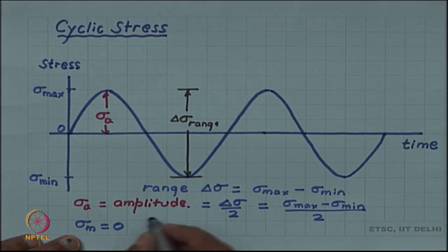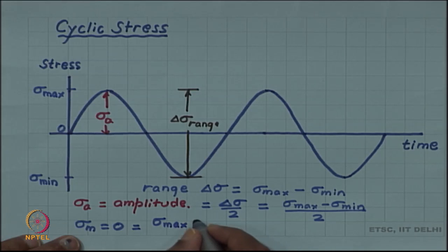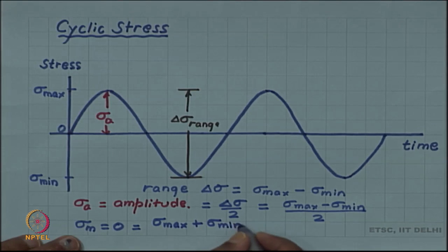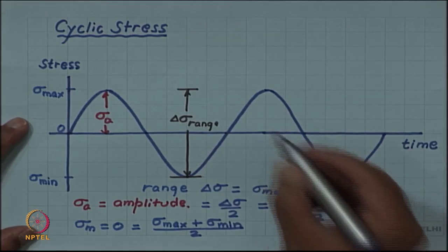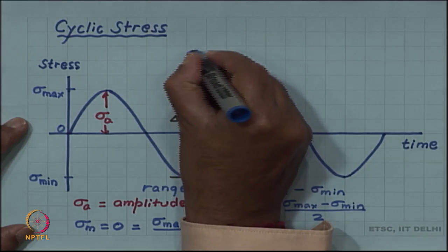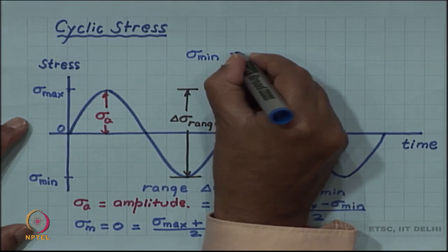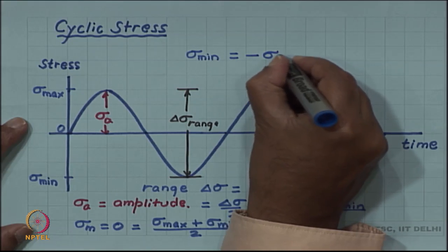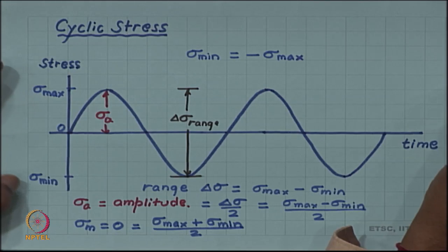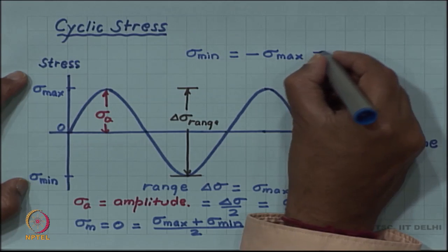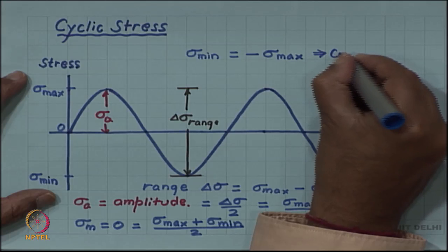The mean value, which is 0 in this case, is actually defined as the mid value of sigma max and sigma min, which is sigma max plus sigma min by 2. This kind of cycle where sigma min is equal in magnitude but opposite in sign - sigma max is tensile but sigma min is compressive - this kind of cycle is called completely reversed cycle.